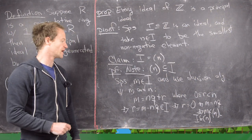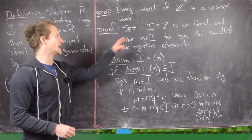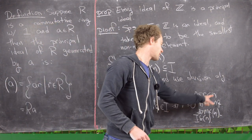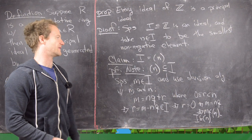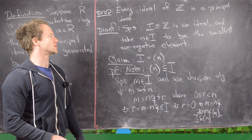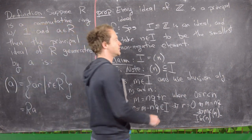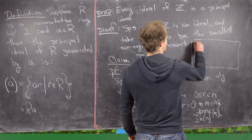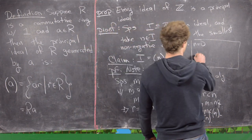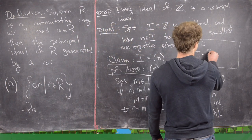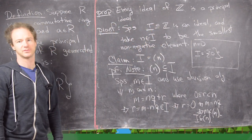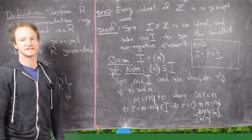I should note that if N equals 0 this argument doesn't quite work, since there are no such R values satisfying the division condition. If the smallest non-negative element is 0, I'll leave it as an exercise to work out that the ideal itself is just the zero set — a trivial ideal. This is a good place to end the video.